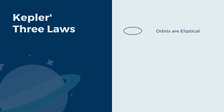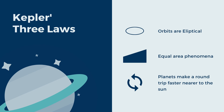We're going to go through Kepler's three laws, which states that orbits are elliptical, orbits possess an equal area phenomena, and planets move faster when closer to the Sun.